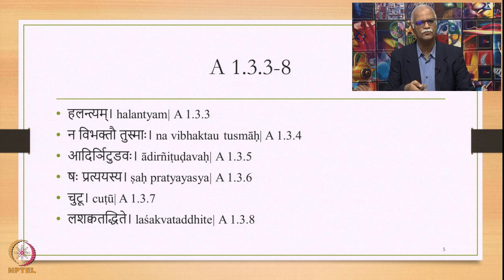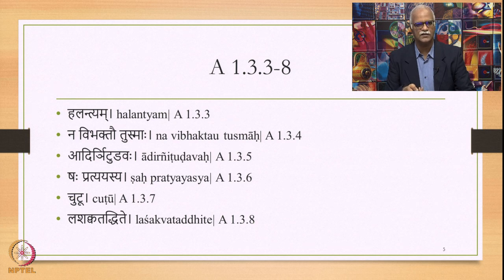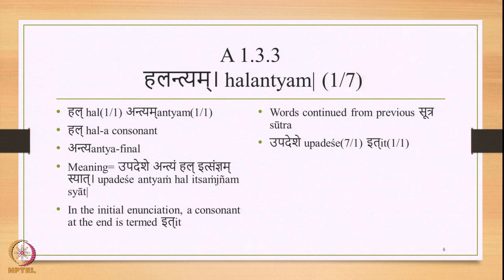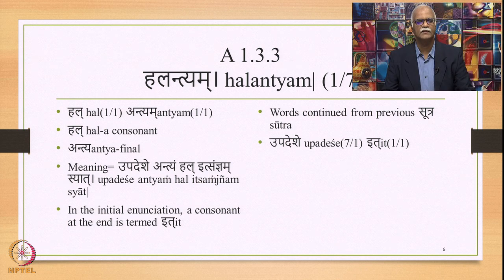We shall study the sutras that primarily define the consonant marker. We have already seen 1.3.2 which defines the vowel marker — Upadeshe Acha Ananasika It. Today we shall focus on consonant markers, beginning with the first sutra: Halantyam. We have studied this sutra before when discussing Pratyahara formation, where the final consonant of all 14 sutras is termed It, allowing us to form Pratyaharas such as Ach, Hal, Al, and others.